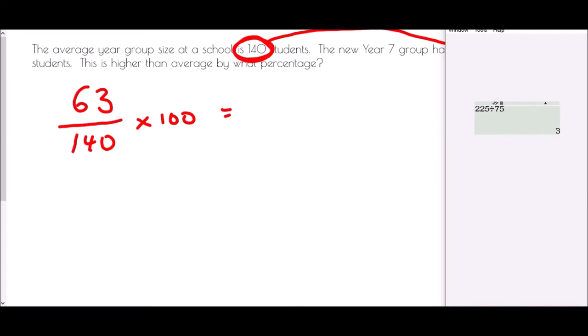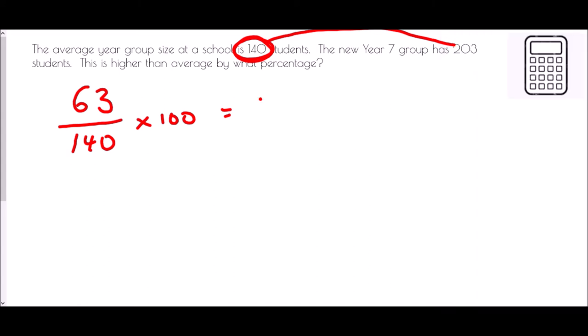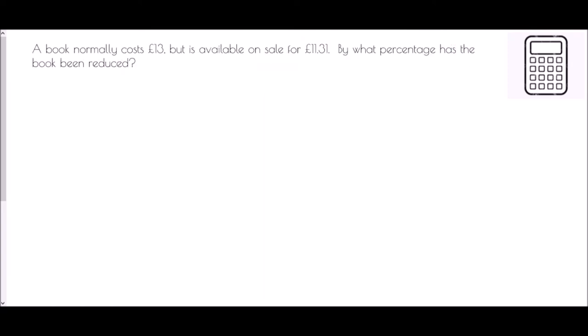So I'll just grab the calculator and what we've got is a fraction 63 over 140 and we're going to multiply that by 100. And if we do that we get straight away an answer of 45. And so this is 45%.